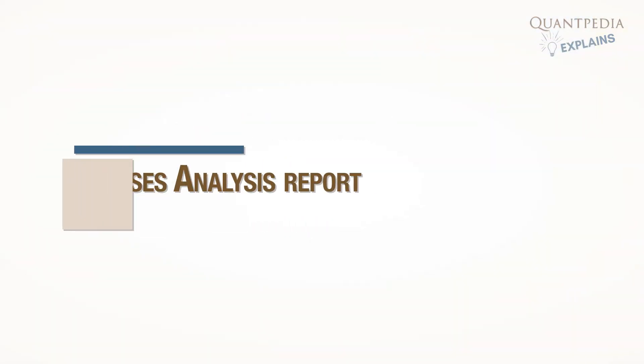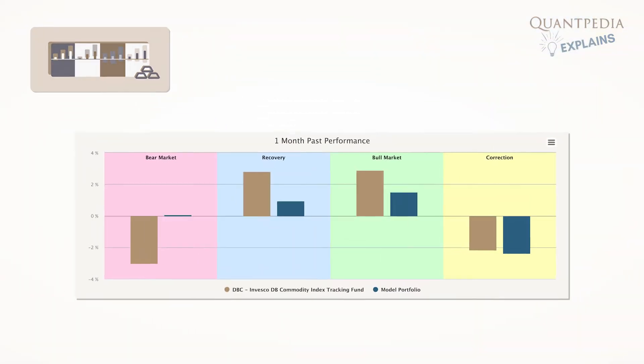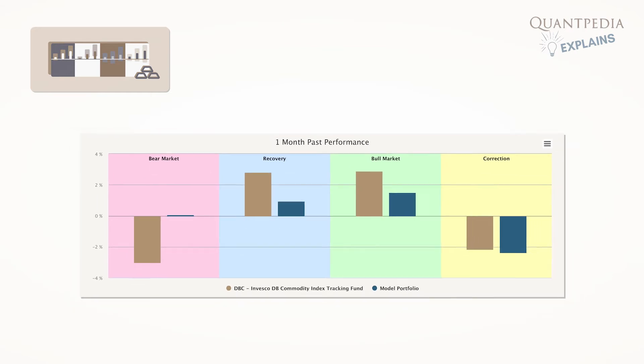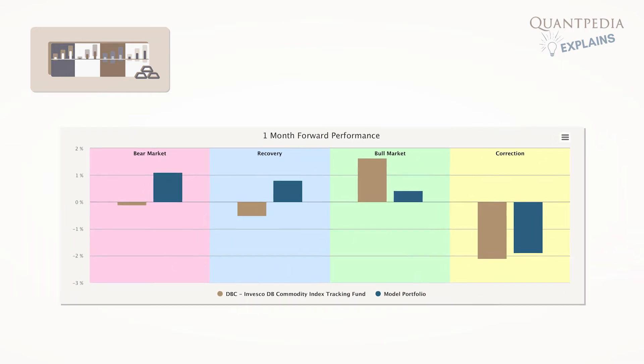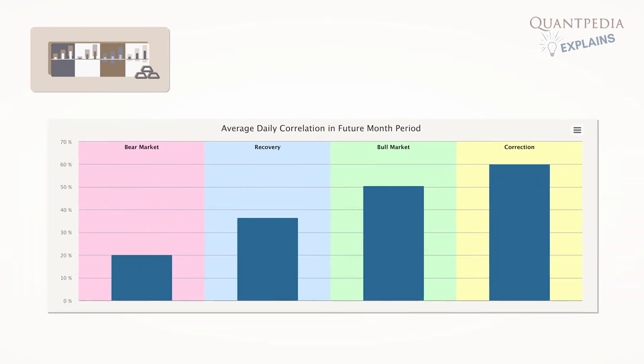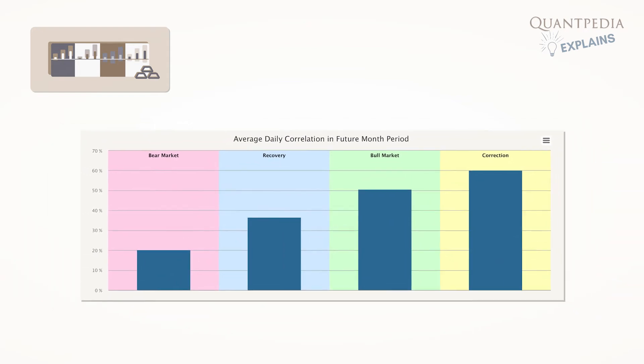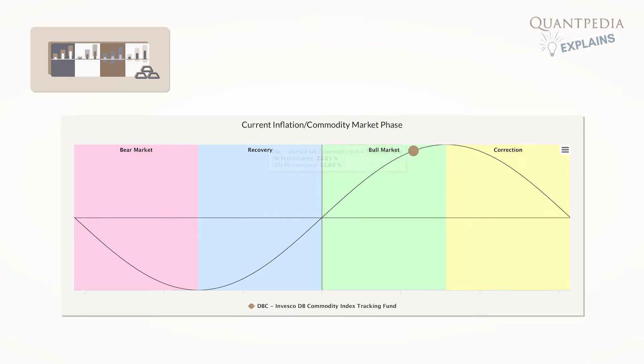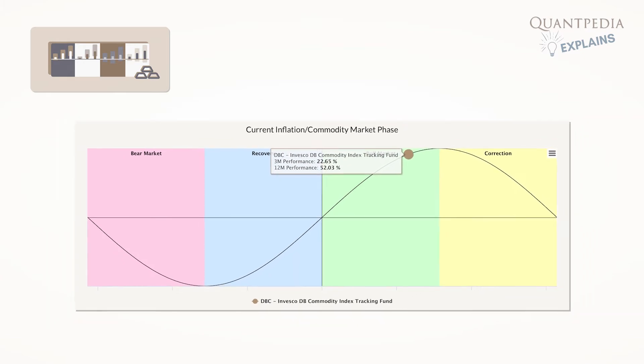The Commodity Phases analysis report shows past portfolio performance before each inflation phase, and future portfolio performance in or after each inflation phase. Also shows the portfolio's correlation to equities in or after each inflation phase. We use the DBC ETF as a proxy for the broad commodity market.